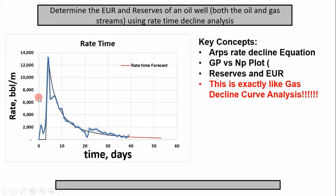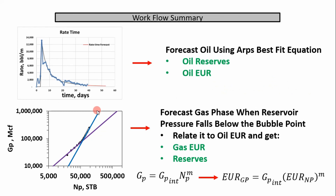The next thing we need in this oil analysis is to look at the gas aspect as well, because we're going to see both gas and oil streams. We do that with a cumulative gas production versus cumulative oil production plot. This will help us get the EUR of our gas and also the gas reserves value. The typical workflow is to look at a rate-time plot, fit our ARPS equations to the oil rate, and forecast to get our oil reserves and oil EUR.